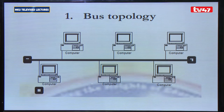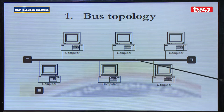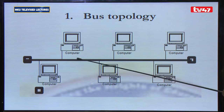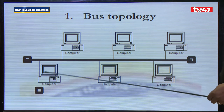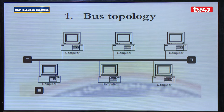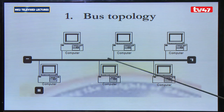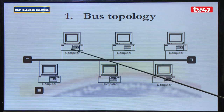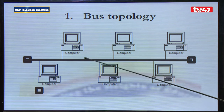We'll start with the bus topology. In a bus topology, all the computers are connected through a central cable, which is referred to as the bus cable. Each computer is connected to that particular cable, and when a computer wants to transmit data, it uses this central cable that relays that data to the destination computer. The data will get to the bus cable and flow through it to the destination computer.